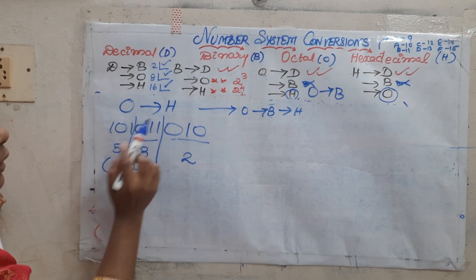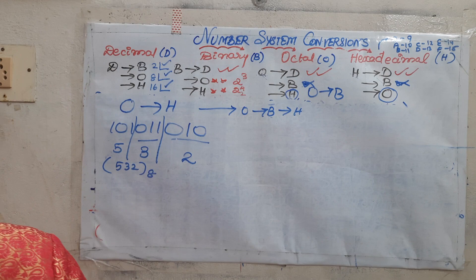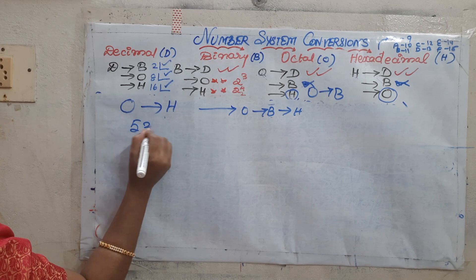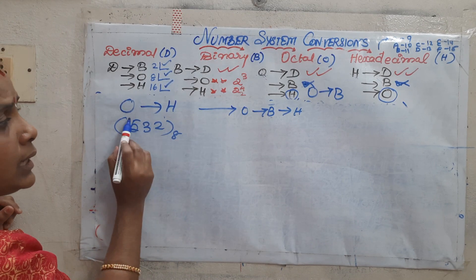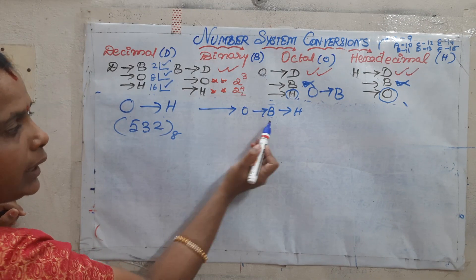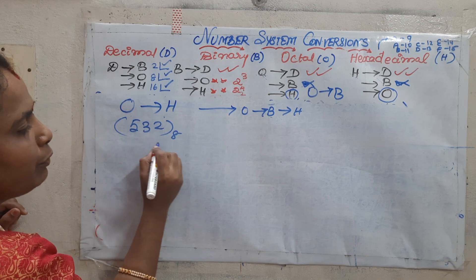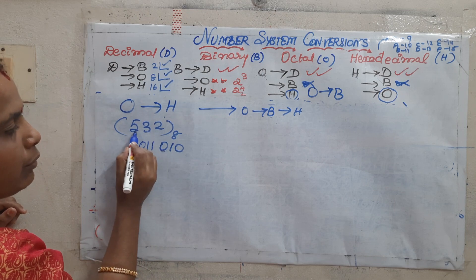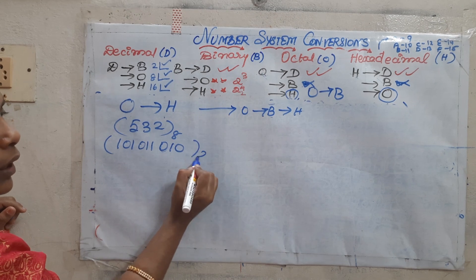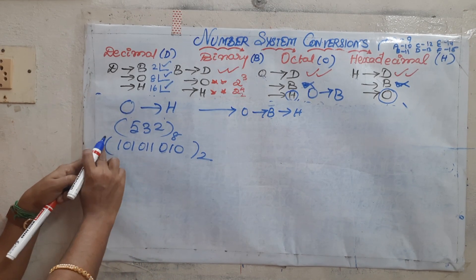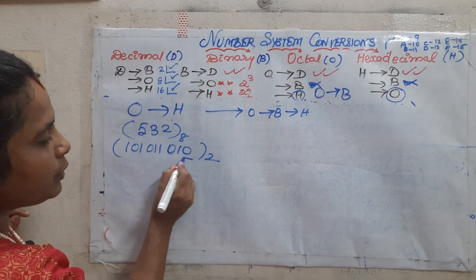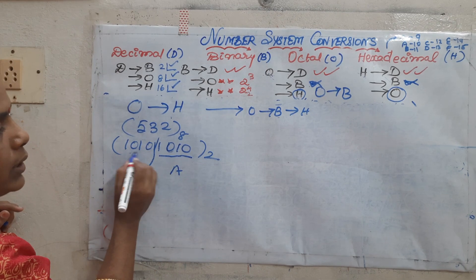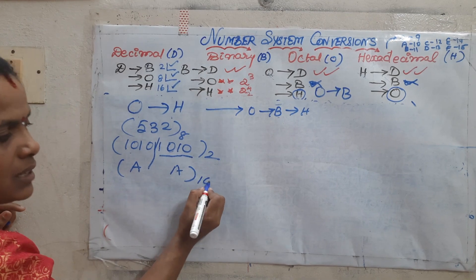Now we do binary to hexa: group the binary result in terms of 4 digits from the right. 1010 is A, and the remaining bits 0101 give 5. Wait — let me correct: 532 base 8 gives binary 101 011 010. Grouping in 4s from the right: 1010 is A, and 0001 is... actually 0101 gives 5. The hexadecimal answer is 15A base 16.